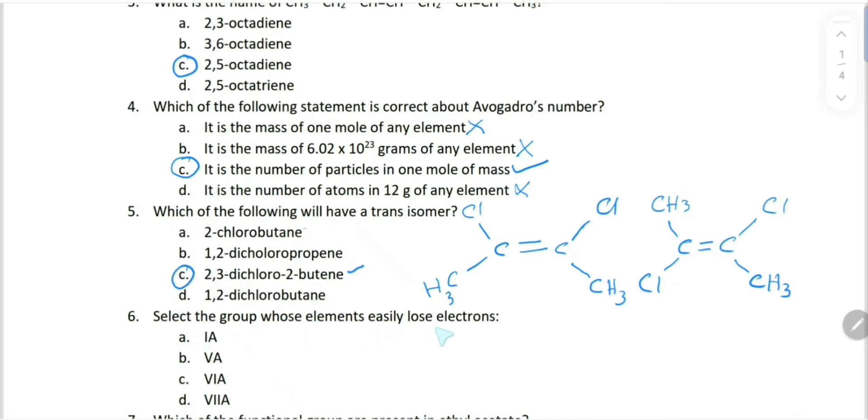Select the group whose elements easily lose electrons. The more electropositive in the periodic table - as you go from left to right, electron losing property decreases. Group 1A is the first group on the left, so they easily lose electrons and are more electropositive.